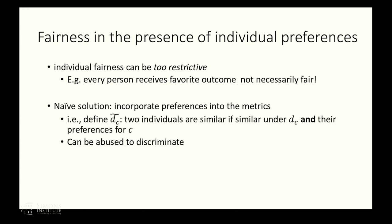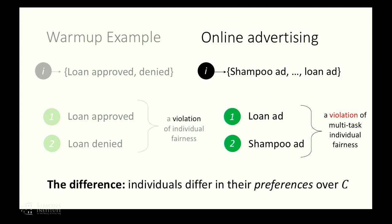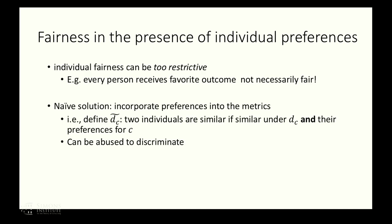Before getting to our proposal, I want to mention a naive solution. Looking back at this example, you might say the first and second persons are similar with respect to the loan ad, but the fact that they have different preferences maybe should render them as not similar. This suggests incorporating preferences directly into the metric and staying with the same definition of individual fairness. Formally, you could define a metric that says two individuals are similar only if they're similar with respect to the metric and also with respect to their preferences for the ads. However, this is a good approach but can also be used to discriminate — so we don't want to use this definition.